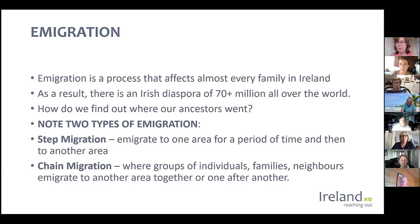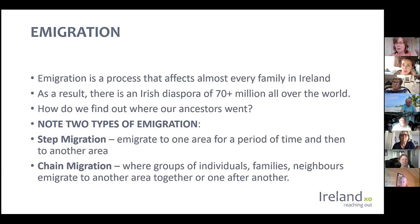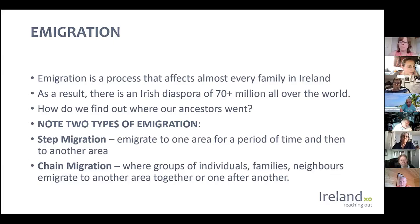As a result of emigration, we have a diaspora — people that can claim Irish heritage — of at least 70 million people. We see that when we have visitors from New Zealand, Peru, Canada, America, and all over. So how do we find out where our ancestors went? I'm going to talk about that based on country and look at some of the different sources we can use.